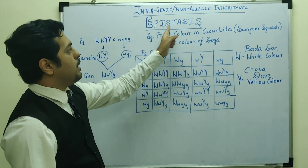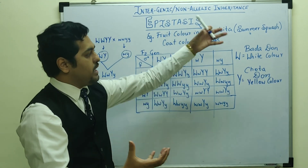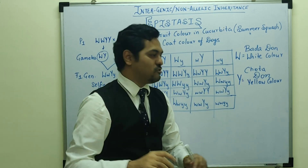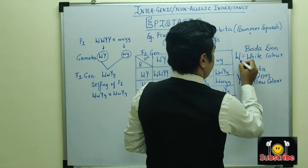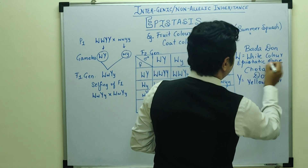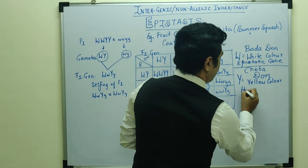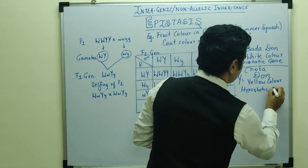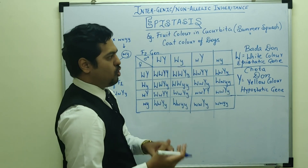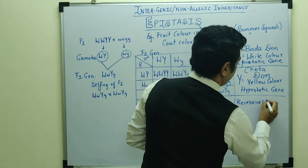This concept is Epistasis. 'Stasis' means stop, and 'Epi' means above — so one gene is above the other. The big Don W is the epistatic gene, stopping the expression of capital Y. So capital Y is the hypostatic gene. And when you have small W, small W with recessive genes, then the fruit colour is going to be green.